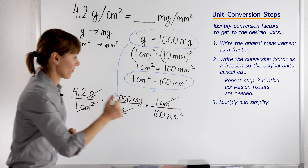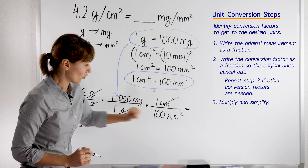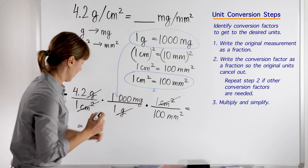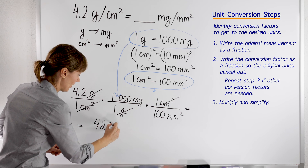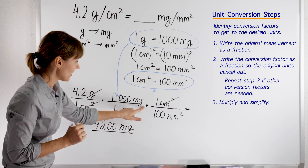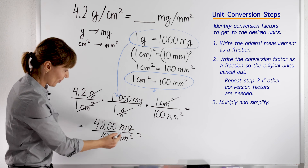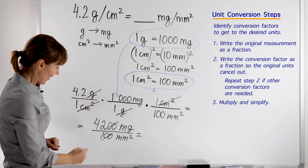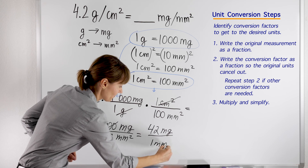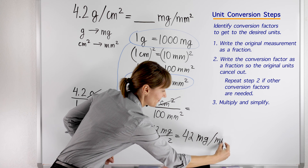We are ready to do the math. We are going to multiply the numbers in the numerators, then multiply the numbers in the denominators, and then simplify. So, 4.2 times 1,000 times 1 gives us 4,200 milligrams. In the denominator: 1 times 1 times 100 equals 100 millimeters squared. Now let's simplify — this bar means division. These zeros will cancel, so we will have 42 milligrams per 1 millimeter squared. It is 42 milligrams per millimeter squared.